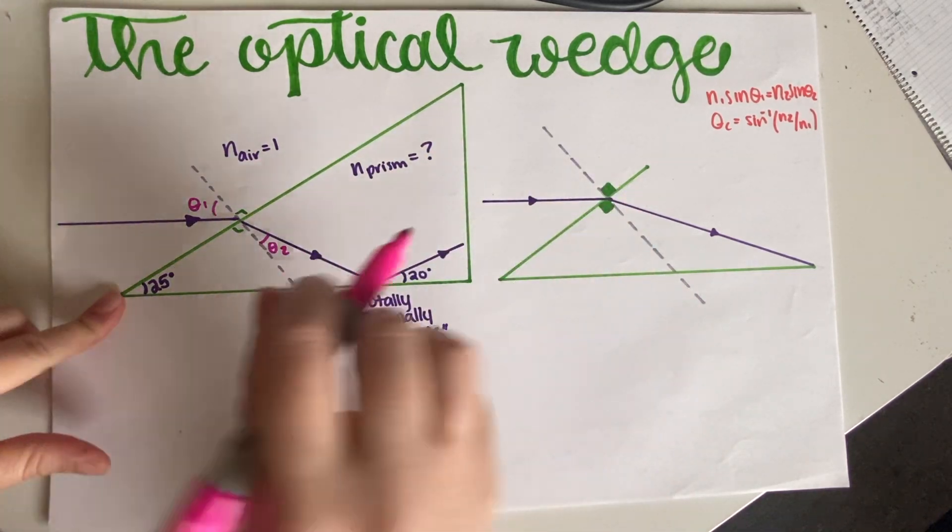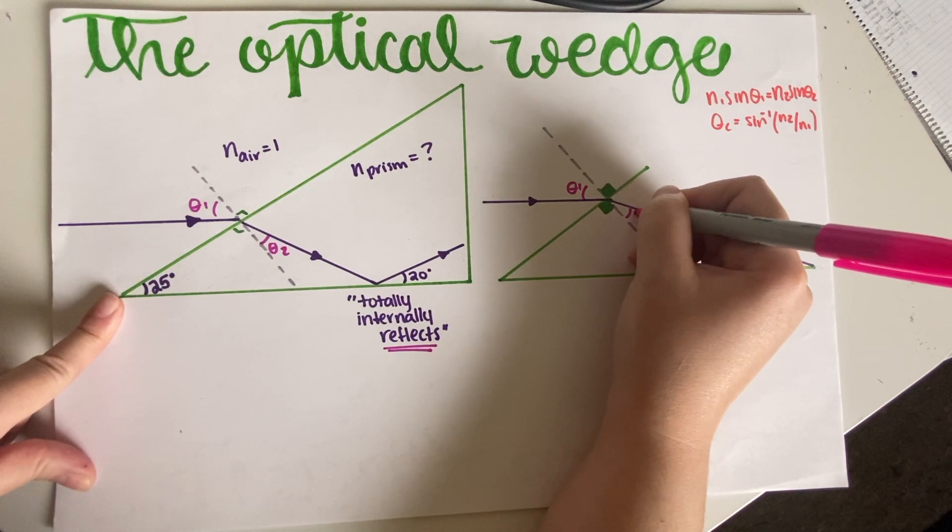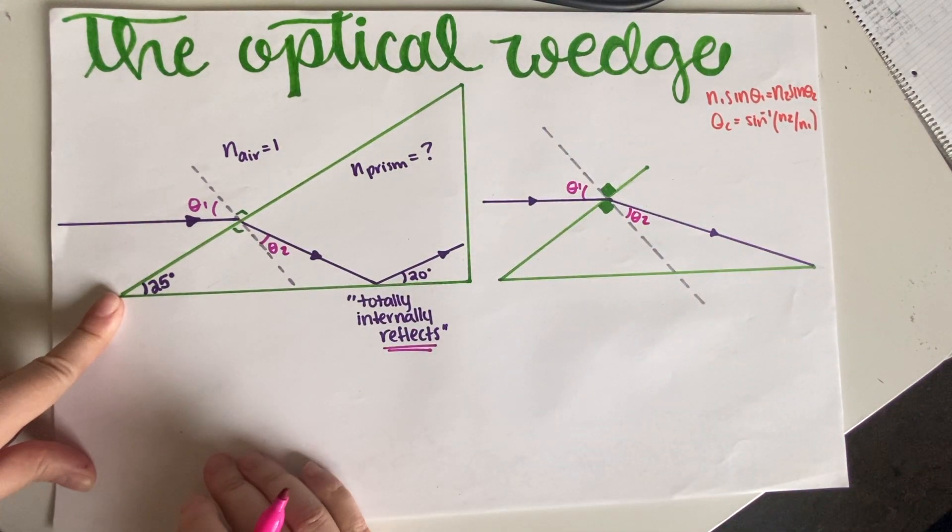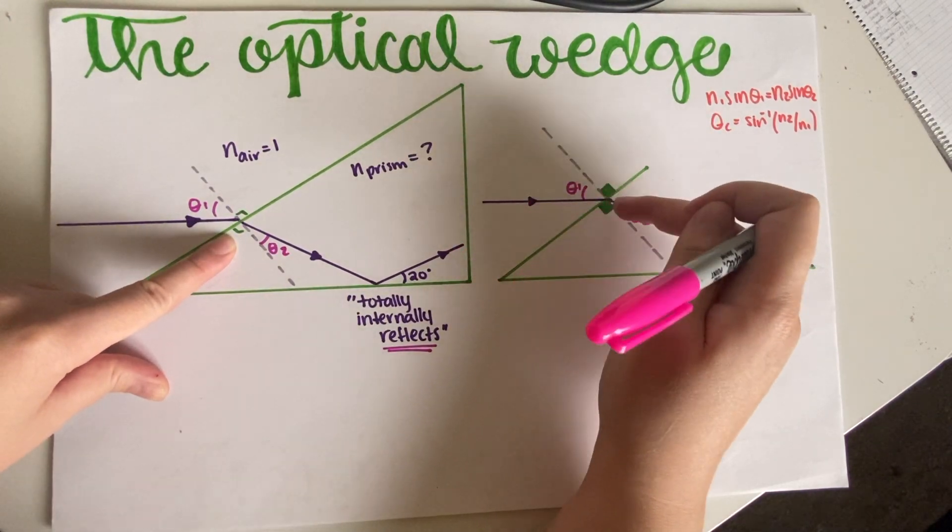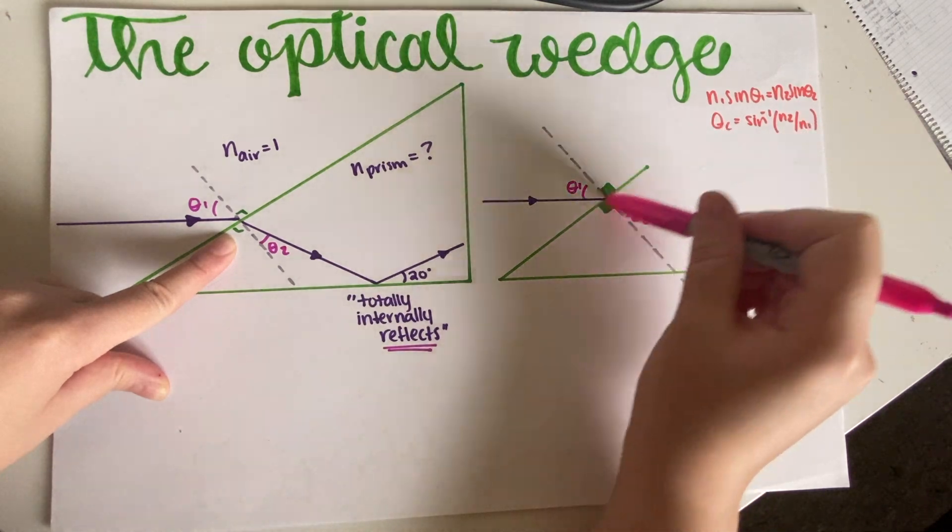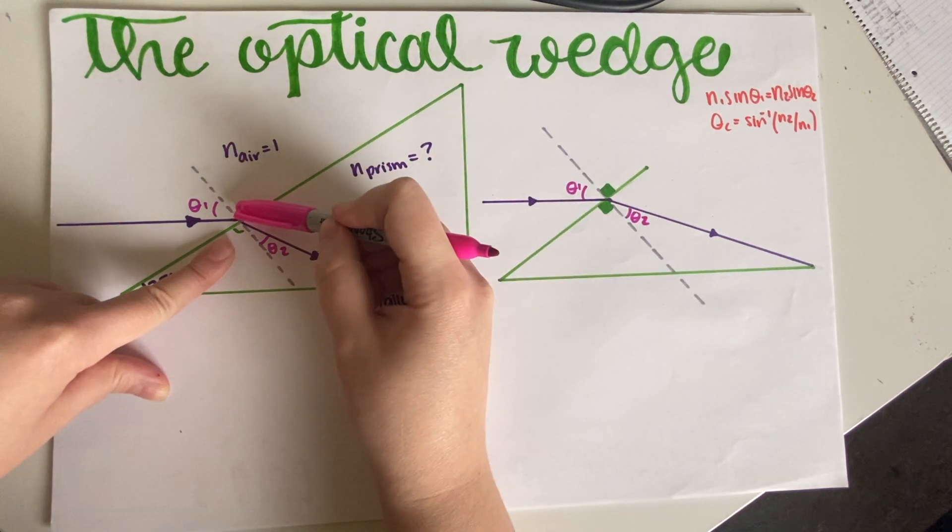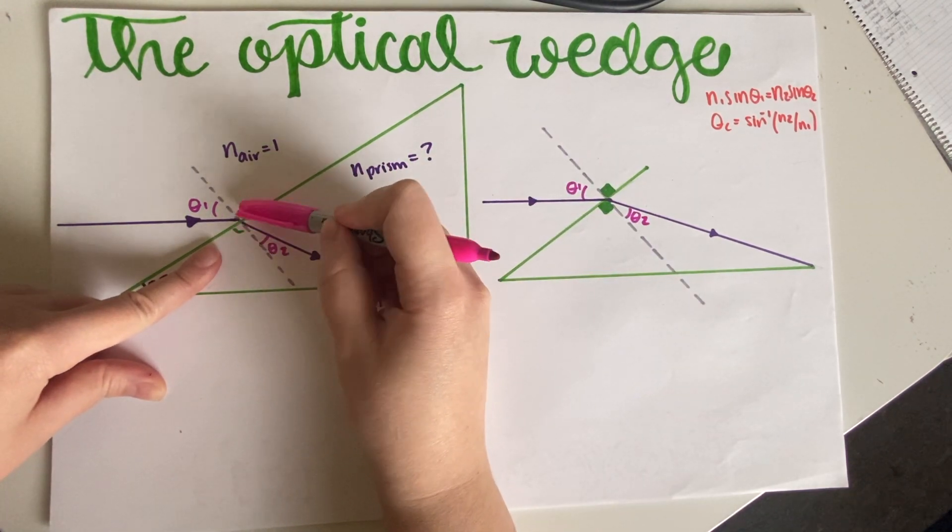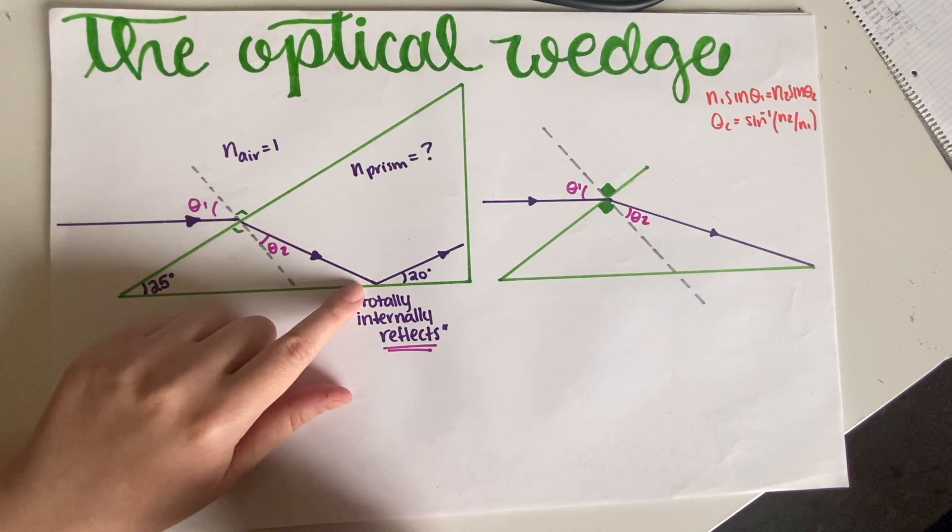Now, this drawing over here is a zoomed-in version of this triangle over here, because this triangle involves this angle and this angle. So I just wanted to be able to see it bigger. I drew my axis line over here, the line that's perpendicular to my incident surface, which means that this angle and this angle—which is this angle and this angle—are 90 degrees, both of them.